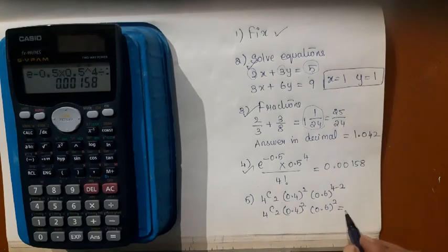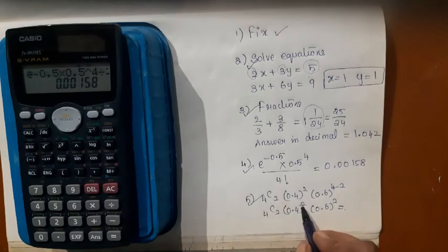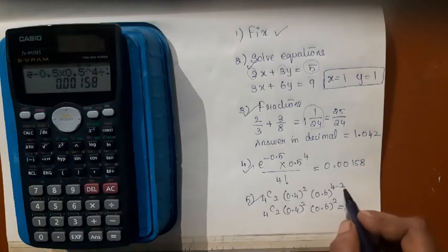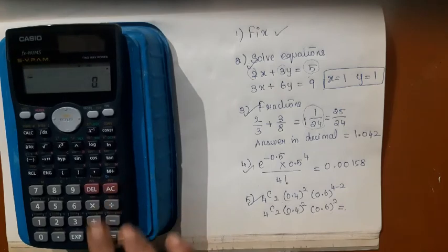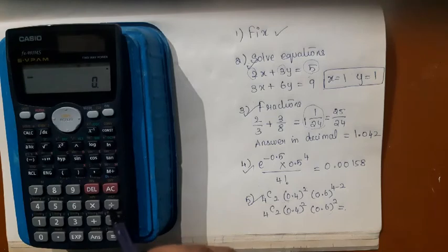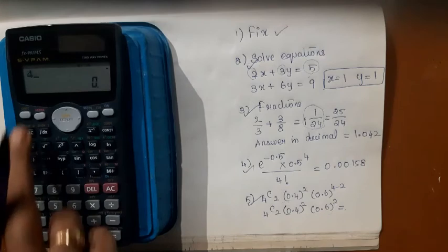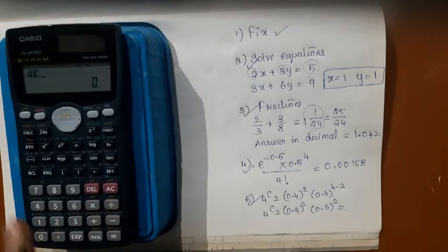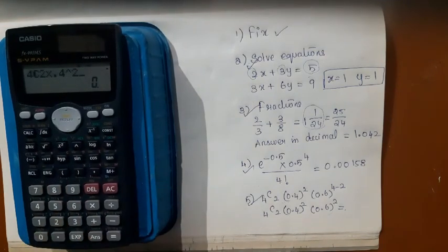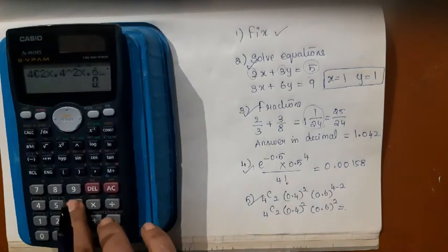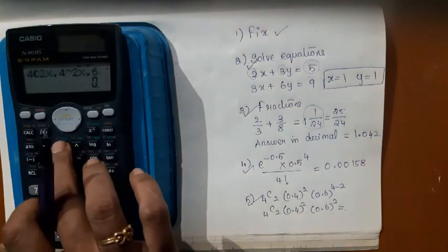Now let us come to the last issue: 4C2, 0.4 power 2, 0.6 power 2. Your nCr key is here, outside this divide symbol, so to call it I should use shift key. 4 shift divide gives C2.